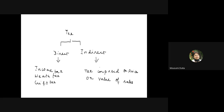Under public debt, the government may sell security papers and take loans from individuals. Many times we purchase government bonds, so selling bonds or directly taking money from organizations all come under the head of public debt. The third important source is printing currency. These are the three major sources of government revenue.